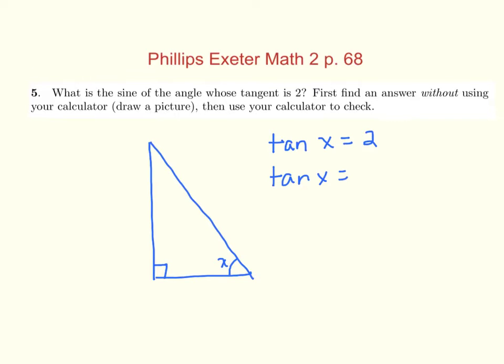If tangent of x is equal to 2 over 1, that means my opposite side over my adjacent side has a ratio of 2 over 1. That's why I tried to draw it like this, with a ratio of 2 over 1.